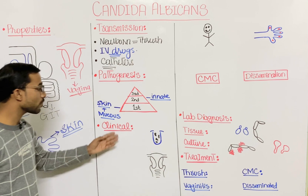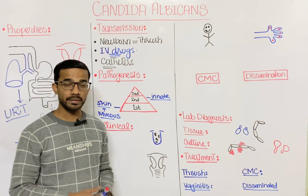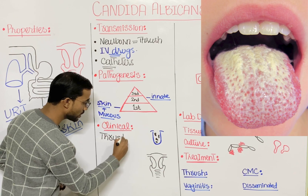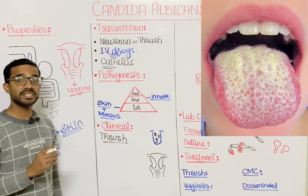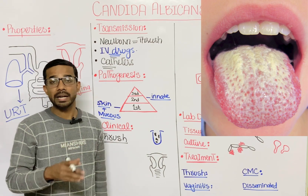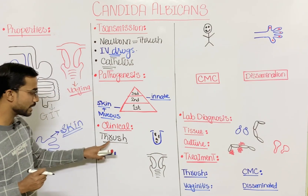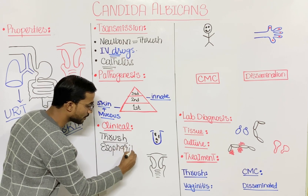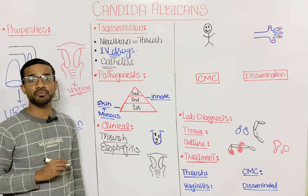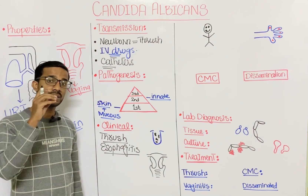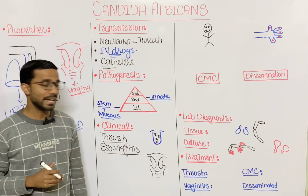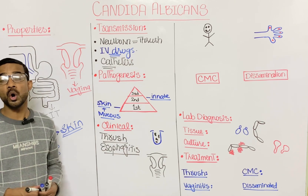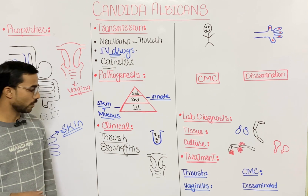Looking at clinical findings, the most important finding in the mouth is the formation of thrush — white plaques on the tongue and around the mouth. You can also see esophagitis, infection of the esophagus when the fungus enters there, specifically in patients who have low cell-mediated immunity.